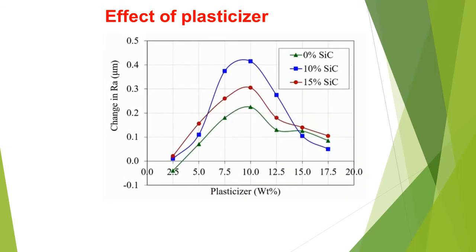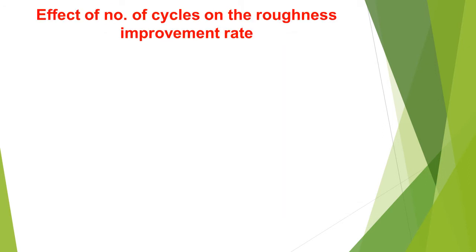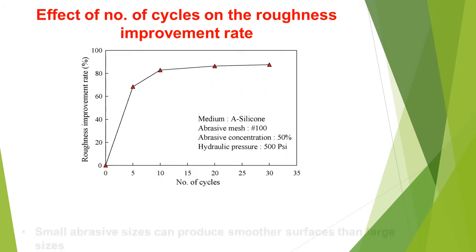The effect of plasticizers in abrasive media shows that a higher percentage of plasticizers results in less RA value and produces smoother surfaces. The effect of number of cycles on the roughness improvement rate is also examined.